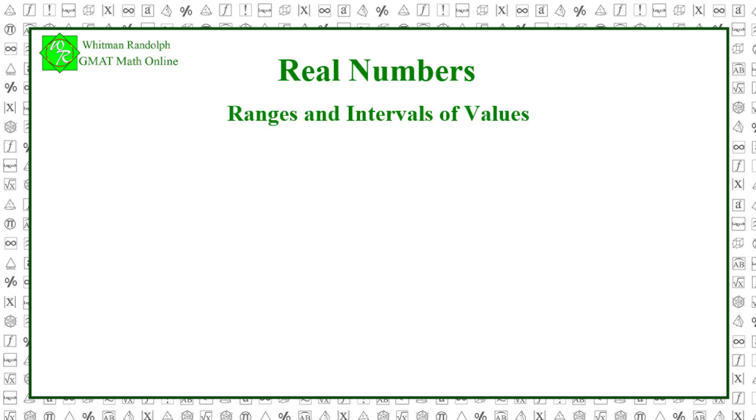We start with ranges and intervals of values. The range of a set of numbers is the non-negative difference between the largest and smallest numbers in the set. Notice that the range is a single number. Intervals of values, on the other hand, constitute sets of numbers in which a given value might be found. Intervals are indicated through inequalities.